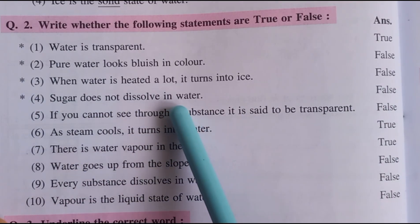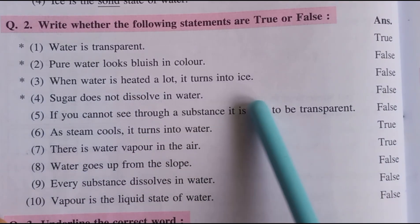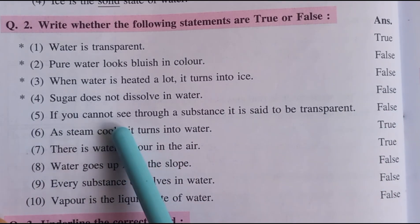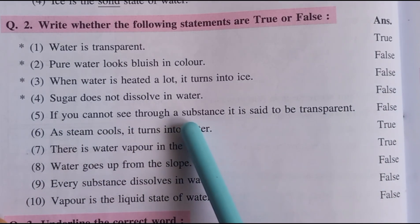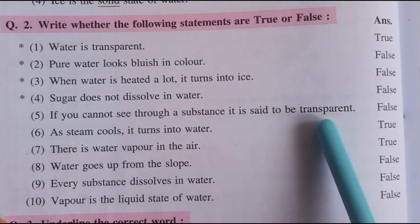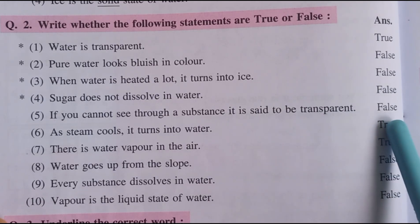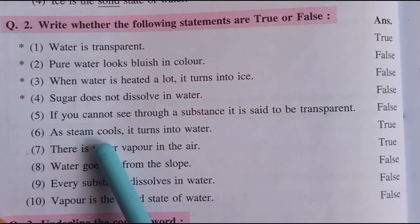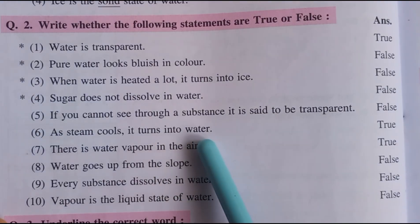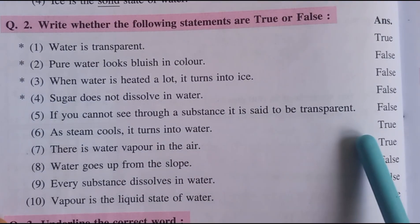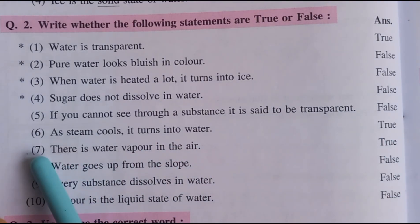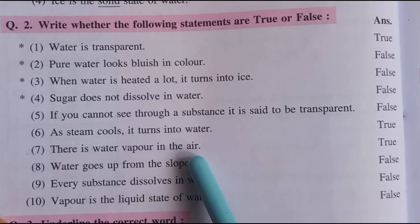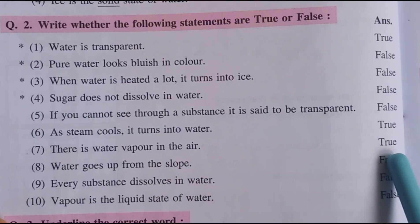Number 4: Sugar does not dissolve in water. Answer: false. Number 5: If you cannot see through a substance, it is said to be transparent. Answer: false. Number 6: As steam cools, it turns into water. Answer: true. Number 7: There is water vapour in the air. Answer: true.